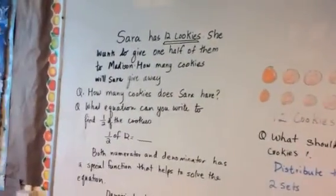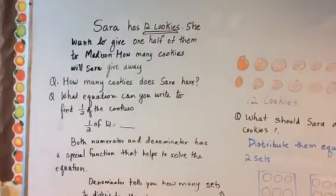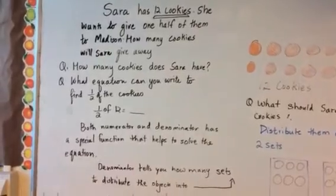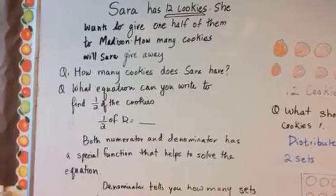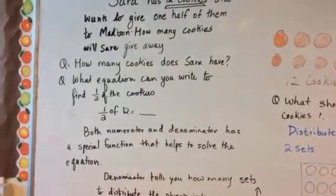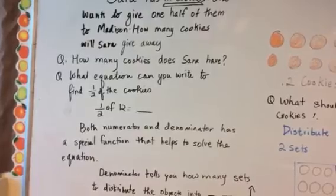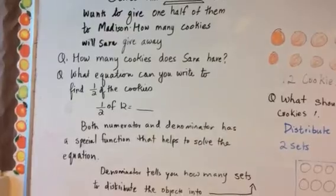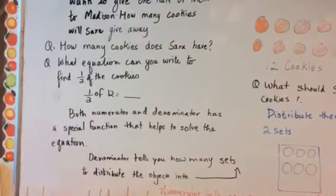If you look at the example here, it says Sarah has 12 cookies. She wants to give one half of them to Madison. How many cookies will Sarah give away? How many cookies does Sarah have? What equation can you write to find half of the cookies? Half of 12 equals what? Both numerator and denominator has a special function that helps to solve the equation. The denominator tells how many sets to distribute the objects into.